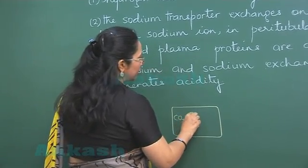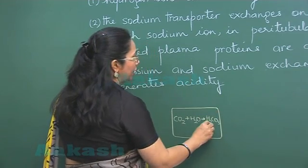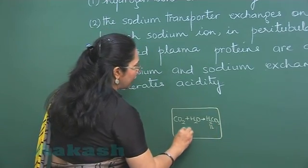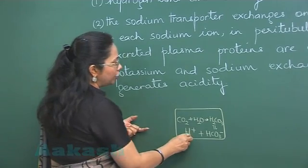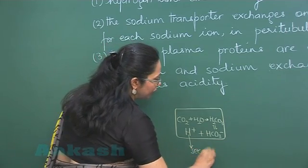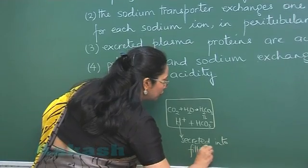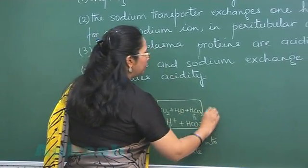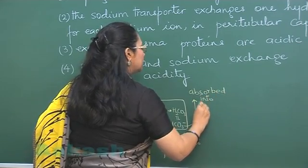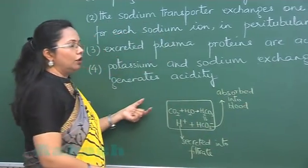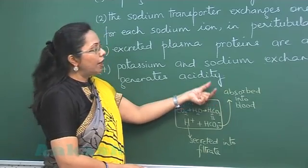This carbon dioxide combines with water to form carbonic acid, and this carbonic acid breaks down or dissociates into hydrogen ions and bicarbonate ions. The hydrogen ions are secreted into the filtrate, while bicarbonate ions are absorbed into the blood.